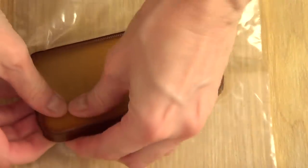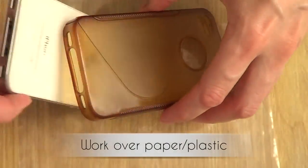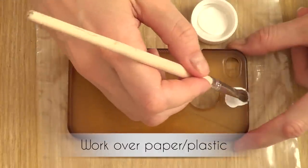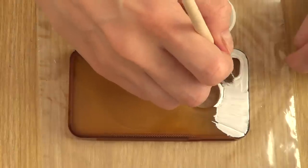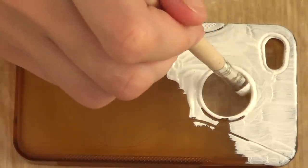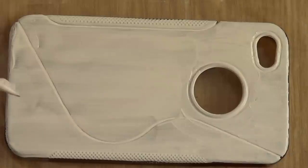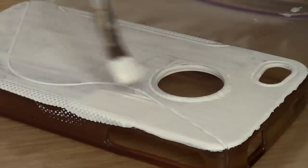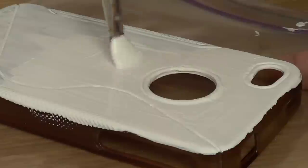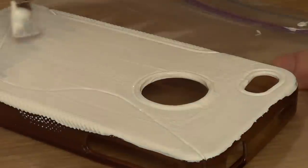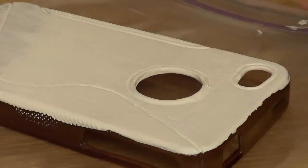First thing I did is took the case away from my phone, and then we're going to paint the phone case. You can use a primer, I'm not going to, I'm just going to go directly, but you can always apply that first. I'm going to give this a couple of coats until it's really pigmented white.